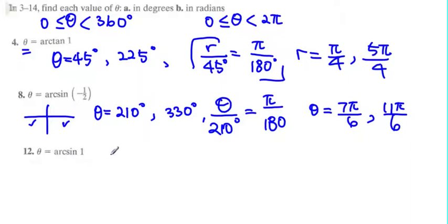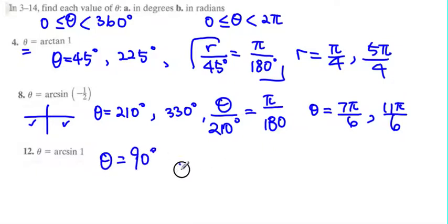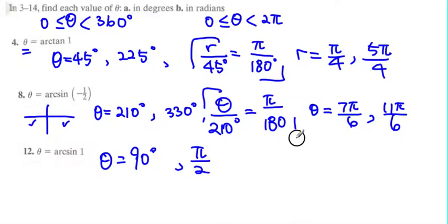Next is arcsin of 1. For this one, we only have one value: theta must equal 90 degrees. And 90 degrees equals pi over 2 using the same conversion ratio.